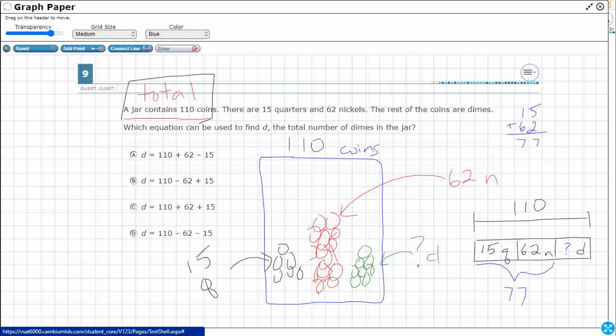So these two together make 77. And so the rest are going to be the dimes, right? So then I can figure this out. I can do my 110 and I could take away my 77. And that's going to be 3, 10 minus 7 is 3. It looks like I've got 33.